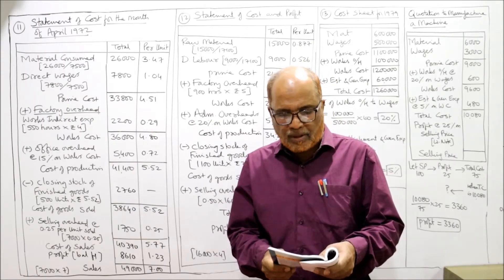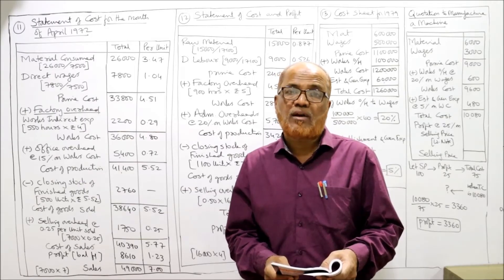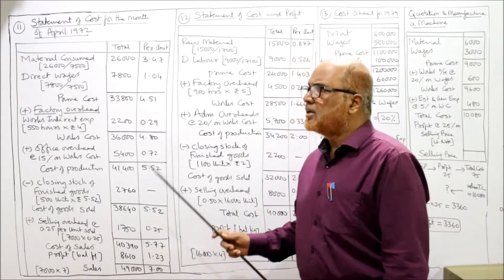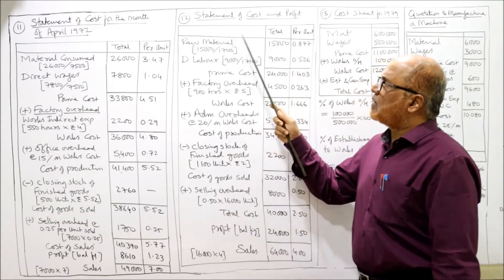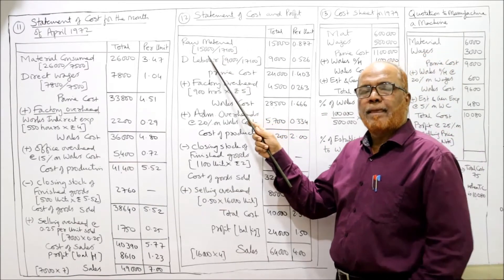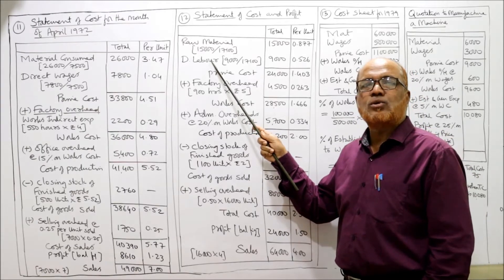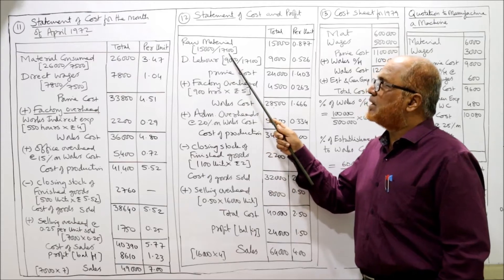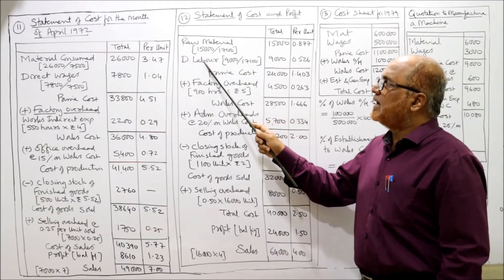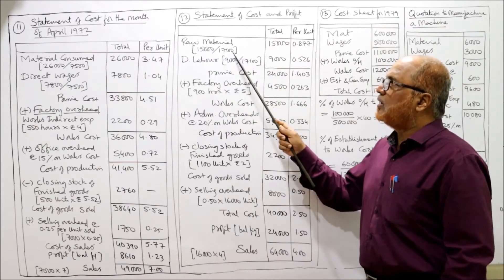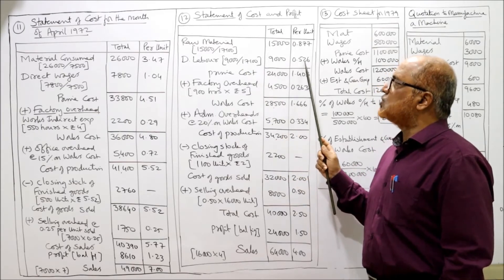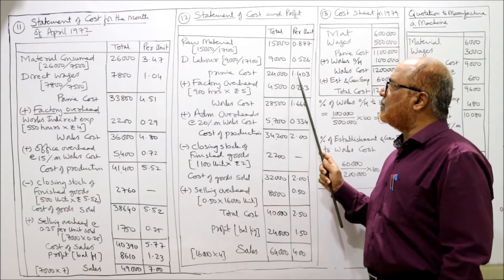We are required to prepare a cost sheet showing cost per unit, profit per unit sold, and profit for the period — just like the previous problem. Statement of cost and profit: raw material total 15,000 ÷ 17,100 units manufactured = 0.877 per unit. Direct labor 9,000 ÷ 17,100 = 0.526 per unit. Prime cost total 24,000 at 1.403 per unit.